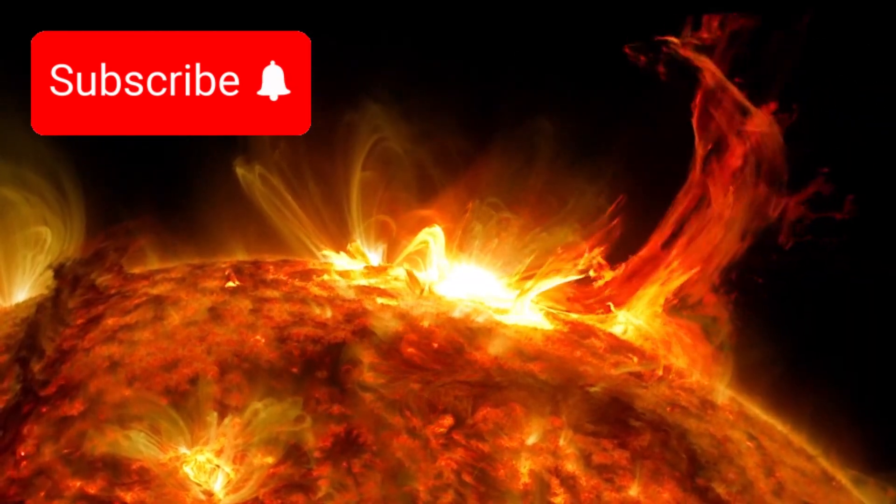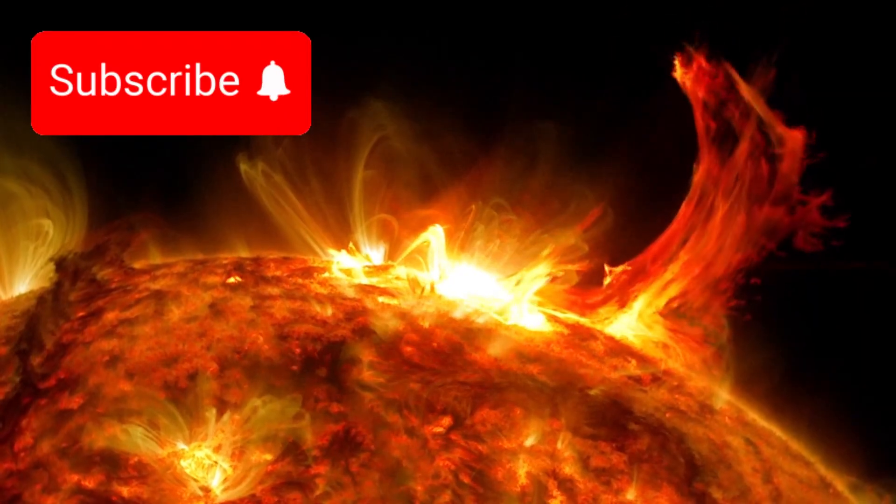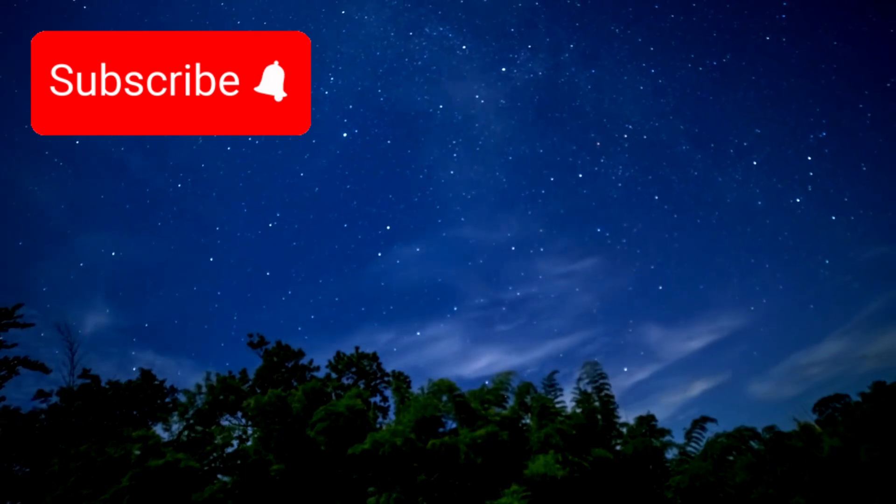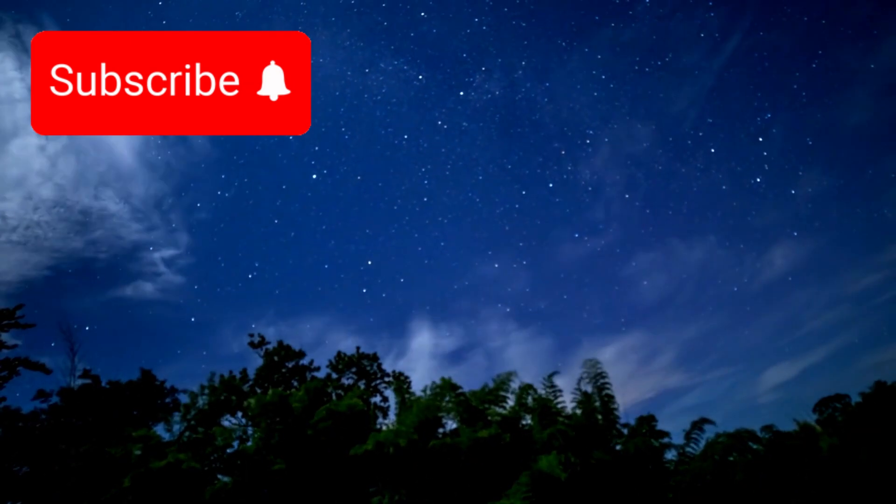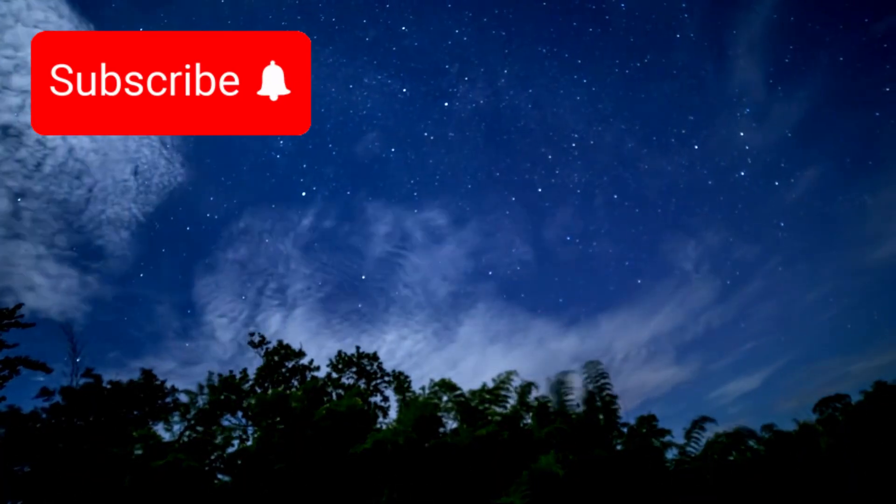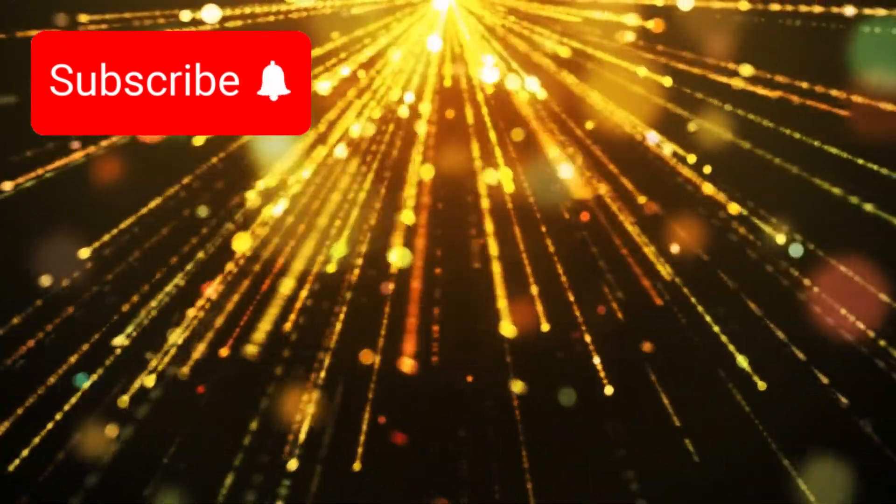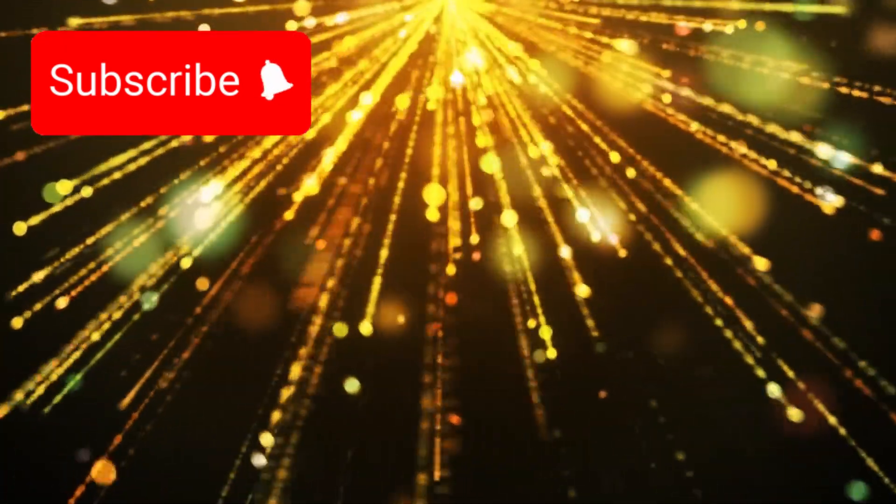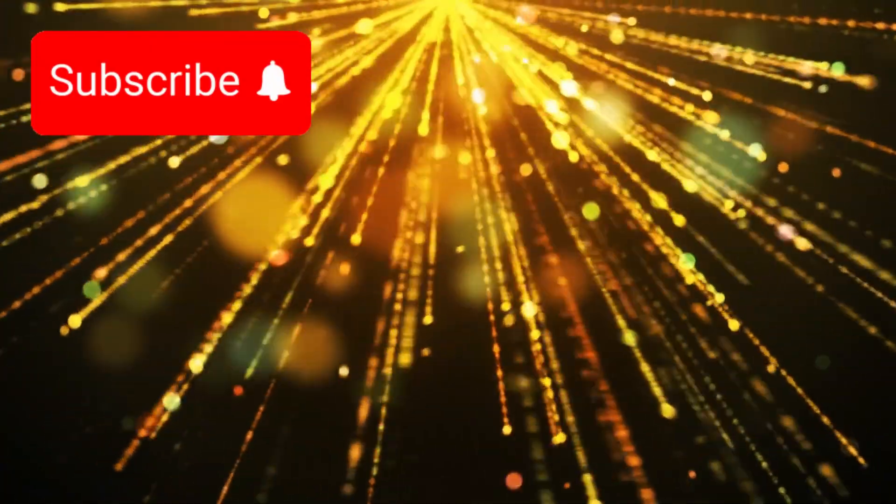Unlike the coronal mass ejections we sometimes see from our sun, this event was vastly more violent. Betelgeuse expelled a gigantic cloud of stellar material, estimated to be hundreds of billions of times more massive than any solar flare recorded from our own star. This explosive outburst likely explains the mysterious dimming event observed in late 2019 and early 2020. As this thick cloud of ejected material cooled and condensed into dust, it began to obscure the star's light, veiling its brilliance in a dark, cosmic fog.